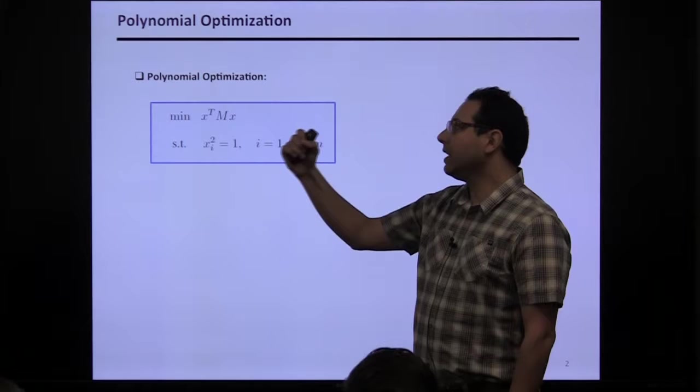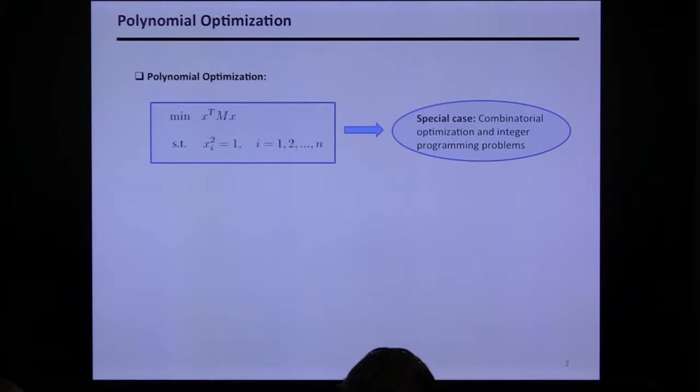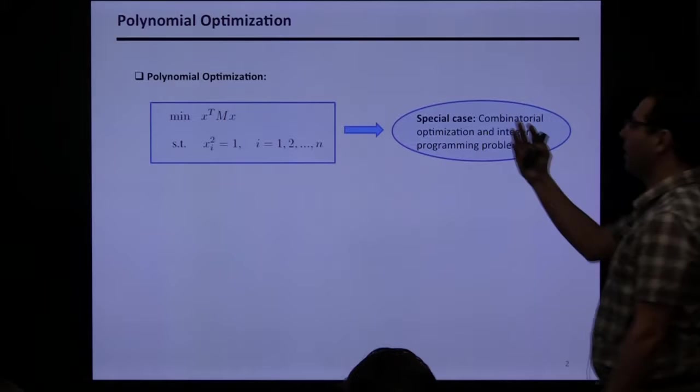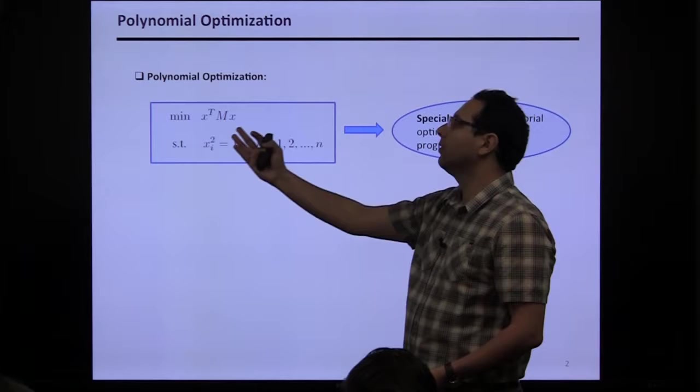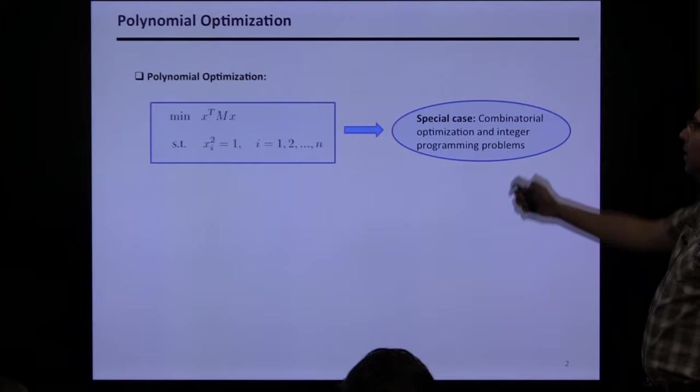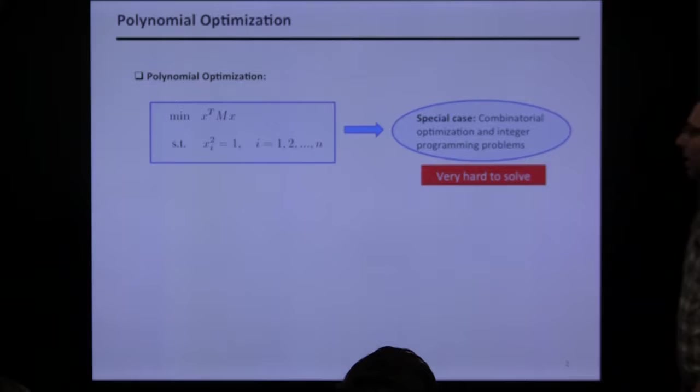This talk is mostly about solving this problem. Polynomial optimization includes combinatorial optimization — if I want to say X is 0, 1, or ±1, I just say X squared equals 1. Since integer programming or discrete optimization is really hard to solve in the worst case, we expect polynomial optimization to be hard.